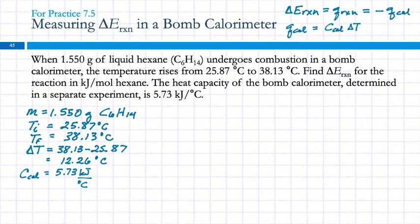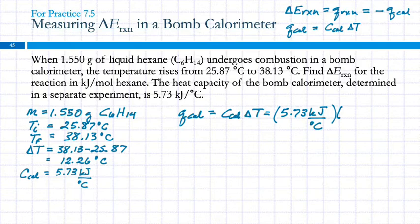Q for the calorimeter is the calorimeter constant times the change in temperature. That C_cal is mass and specific heat capacity together. This is, in the calorimeter, about the only time we look at a heat capacity rather than a specific heat capacity. So, can we calculate the heat for the calorimeter, Q_cal? Do we have C_cal and delta T? Yeah, we do. Q for the calorimeter is C_cal times delta T. We're told that the C_cal is 5.73 kilojoules per degree Celsius. And the change in temperature is 12.26 degrees Celsius. The degrees Celsius cancel out.